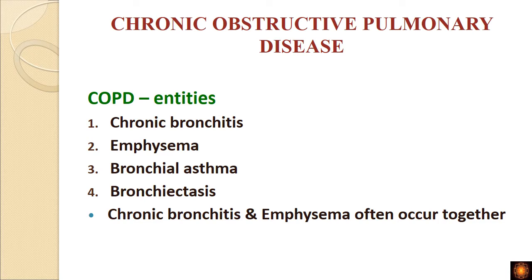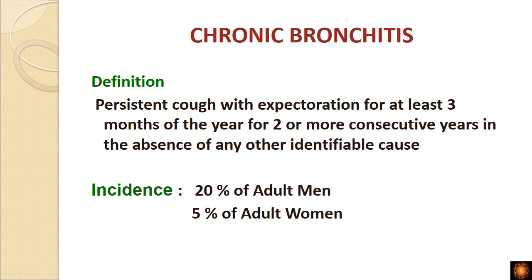Today we will discuss only chronic bronchitis. Chronic bronchitis and emphysema go hand in hand — if chronic bronchitis is left untreated it leads to emphysema. The definition of chronic bronchitis is clinical: if a person has persistent cough with expectoration for at least three months of the year for two or more consecutive years, in the absence of any other identifiable cause, it is called chronic bronchitis.